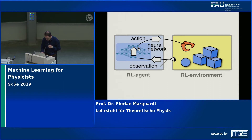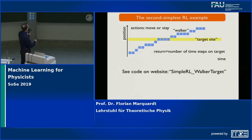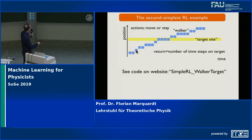We went through a very simple example where the policy did not even depend on the state. Now I want to discuss a more interesting example. Imagine we have a little robot — I'll call it a walker — that can walk and thereby change its position. The steps it can take are either zero or one: either it stays where it is (step of zero) or it moves ahead one pixel. The position as a function of time could look like the one shown here.